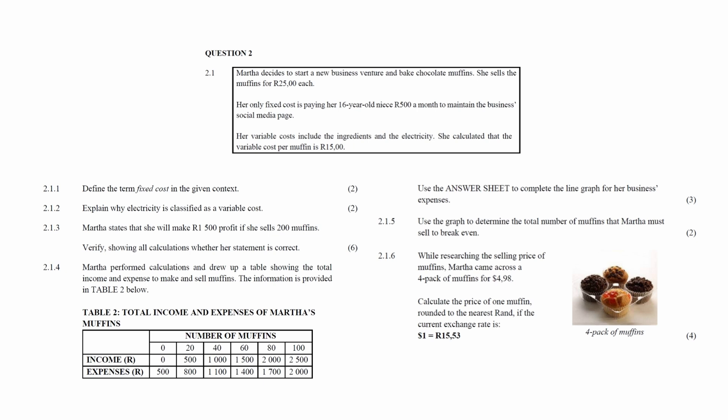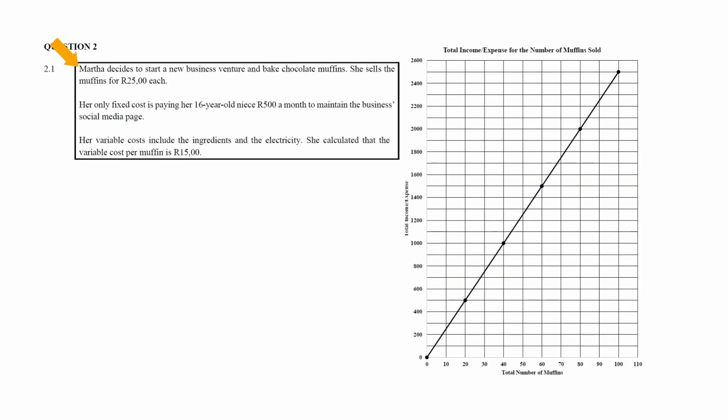Question 2.1 consists of six finance questions designed to assess your understanding of income, expenditure, profit, and loss. It's stated that Martha decides to start a new business venture and bake chocolate muffins. She sells the muffins for 25 Rand each. Her only fixed cost is paying her 16-year-old niece 500 Rand a month to maintain the business social media page. A variable cost includes the ingredients and the electricity, and she calculates that the variable cost per muffin is 15 Rand.